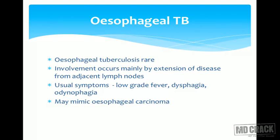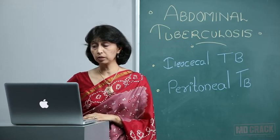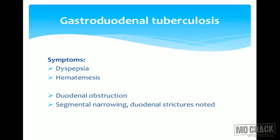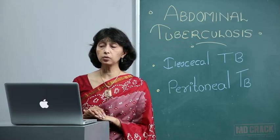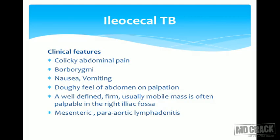While the ileocecal junction is the most commonly involved site, other parts of the GI tract can be affected. In esophageal tuberculosis, there can be ulceration, obstruction mimicking esophageal carcinoma, dysphagia, fever, or odynophagia, though this is rare. Gastroduodenal tuberculosis is also uncommon and can present with dyspepsia, hematemesis, or obstruction with strictures. Overall, esophageal and gastroduodenal tuberculosis is very rare.